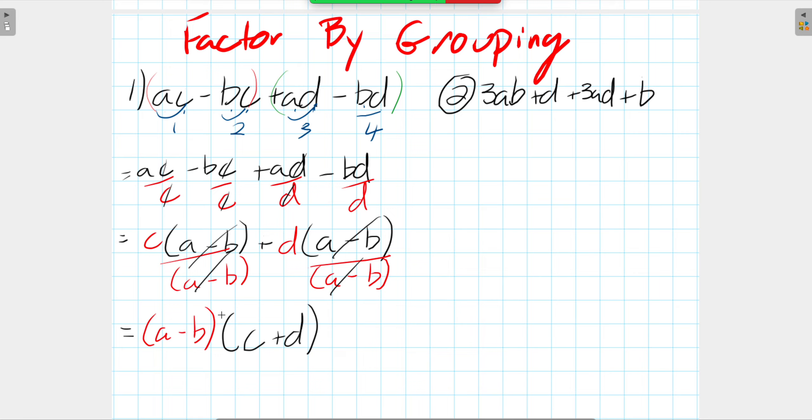So through factoring by grouping, we end up with (A minus B) in parentheses times (C plus D) in parentheses. I could rearrange these in a different order here. We'll go into question 2, and then I'll show you how we could have done question 1 a little bit differently and still would have arrived at the exact same answer.